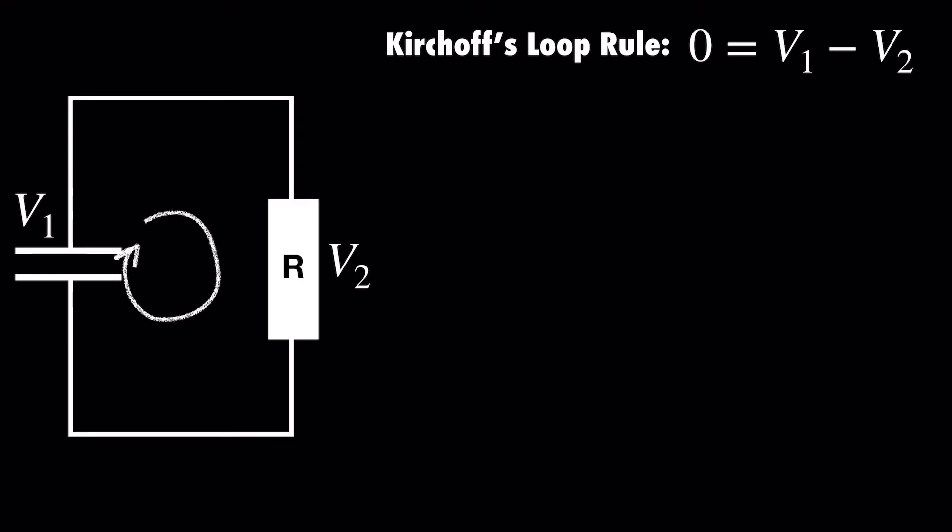We get V1 from the definition of capacitance. C is equal to Q over V, therefore V1 is equal to Q over C.